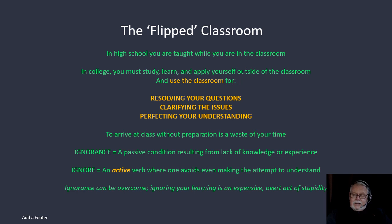There's a difference between being ignorant and ignoring what's going on. Ignorance is a passive state where something happened and you just weren't aware of it. To ignore something — like your assignment — is an active state of being. You are actively avoiding doing the necessary study. Ignorance we can overcome; we can learn, expose, show, tell, explain. But if you are going to ignore your assignments and not do them adequately to come to class, there's nothing I can do to resolve your problem.